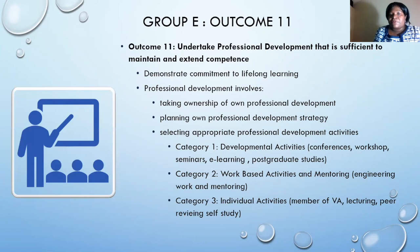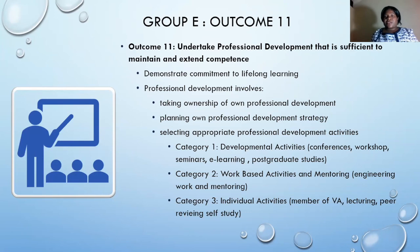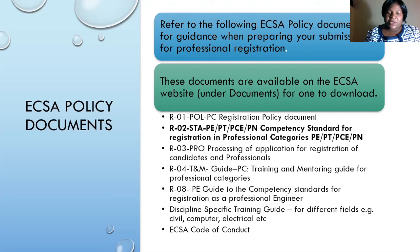Outcome 11 is uniform across the board. I'll leave Outcomes 4, 5, 6, 7, 8, and 11 to the next presenter. The presentation is mainly based on the document RO2 STA PE — Competence Standards for Professional Categories. I encourage everyone to go to the ECSA website and download these documents. They guide you in detail on preparing your submission for application for professional registration.